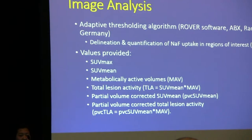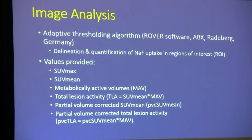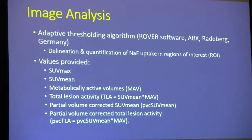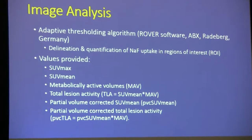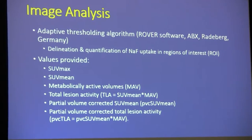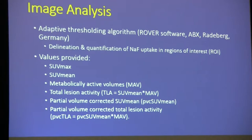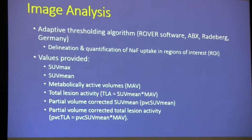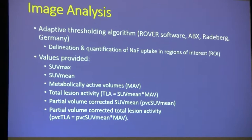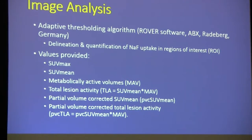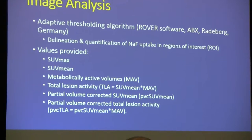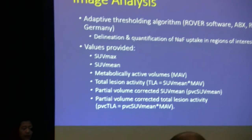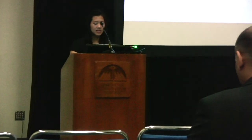For image analysis, we used an adaptive thresholding algorithm called Grover to delineate and quantify areas of sodium fluoride uptake in regions of interest (ROI). Values provided by Grover included SUV max, SUV mean, metabolically active volumes (MAV) — a volumetric measurement — TLA or total lesion activity, which is the product of SUV mean and MAV, and partial volume corrected PVC SUV mean and PVC TLA.